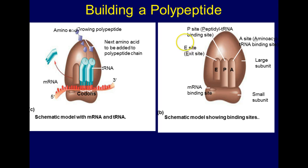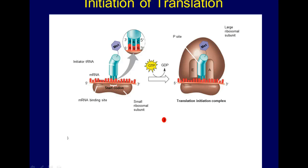Translation ends when a stop codon — UAA, UAG, or UGA — is reached. You may also be asked to list the steps in the translation process on the test. The initiation stage of translation brings together mRNA and tRNA, which carries the first amino acid of the polypeptide. Here's the first amino acid in that polypeptide at the start codon AUG — this is how the ribosome knows when to start reading and start making proteins.